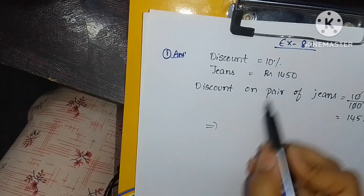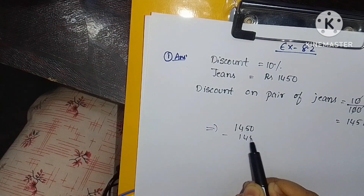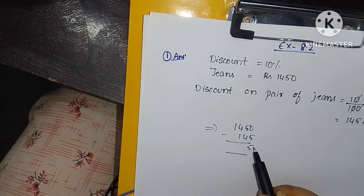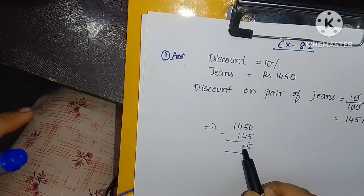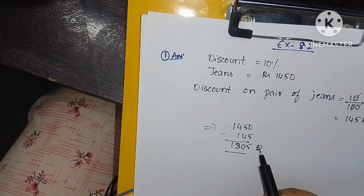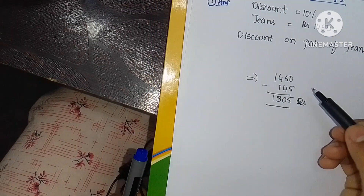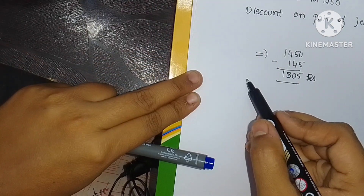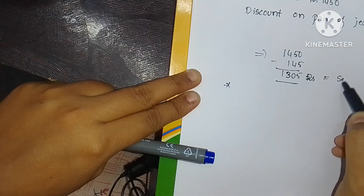So we subtract 1450 minus 145, which gives us 1305 rupees. This is the amount after the reduction, that is, the selling price after the discount.